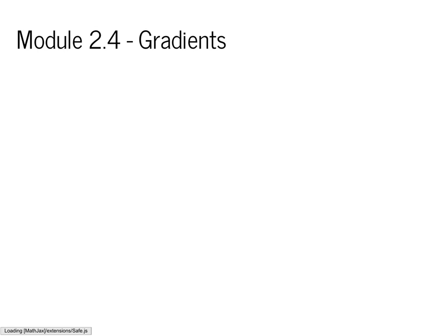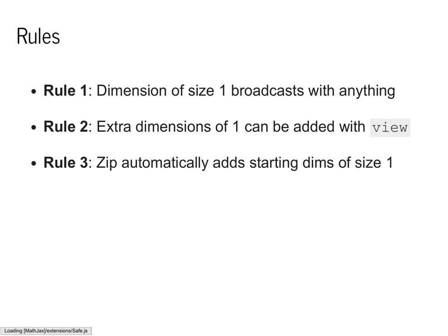Welcome back to MiniTorch. In this module, we'll cover gradients, which is the last topic in our section on tensors. Recall that last class we talked about broadcasting. Broadcasting allows us to combine two tensors of different shape into a third tensor. These rules determine what the shape of that third tensor will be and whether this combination is possible.